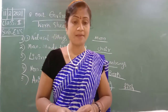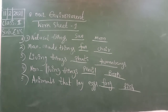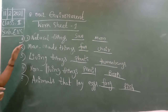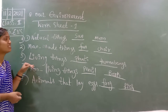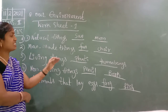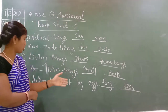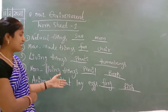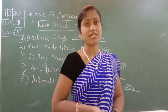This is the first bit. So let's recap: natural things — sun, moon; man-made things — fan, chair; living things — plants, human beings; non-living things — pencil, book; animals that lay eggs — frog, fish. This is about the first bit.